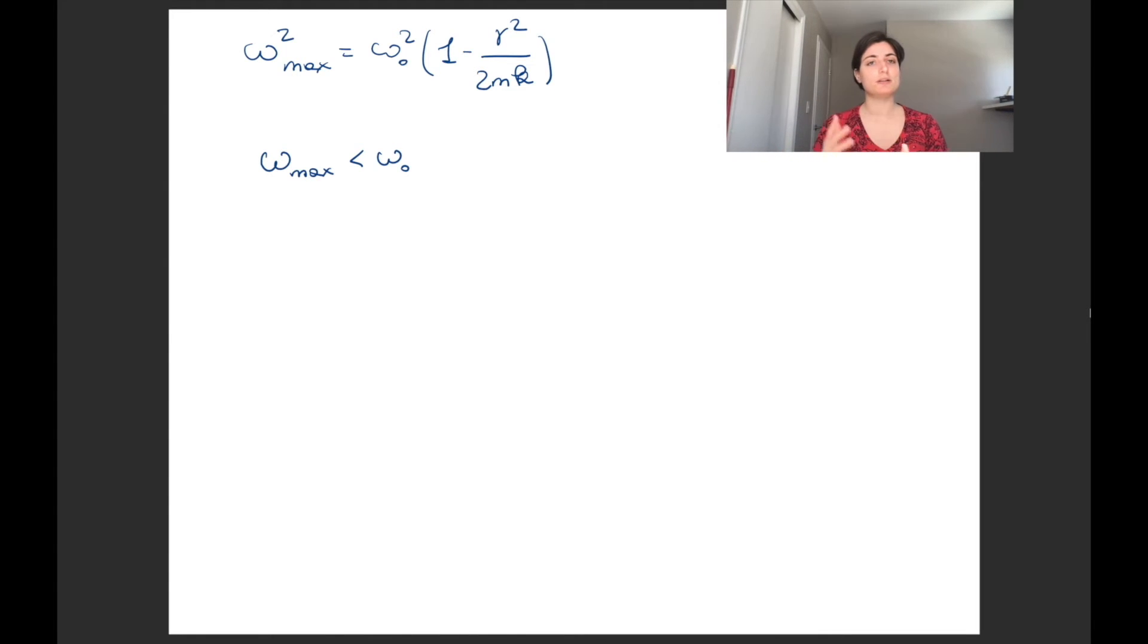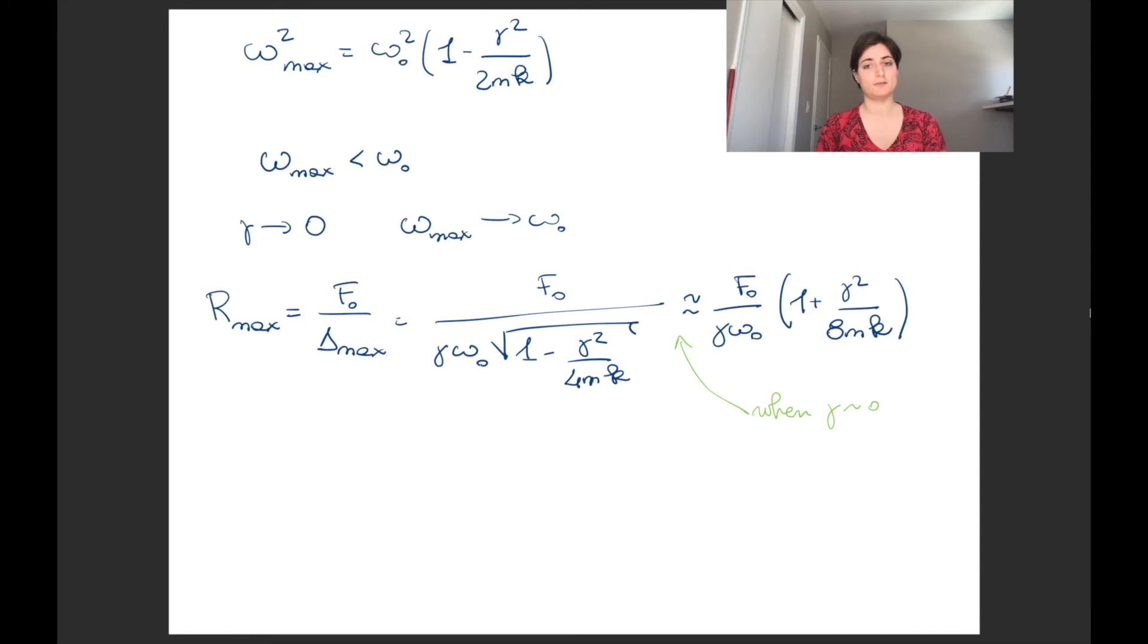Think of it like you want to test a spring and you're testing different frequencies at which you're giving the input until you get the biggest one. Omega_max is the biggest one. With this formula we notice that omega_max is smaller than omega_naught. For gamma tending to zero, omega_max tends to omega_zero.